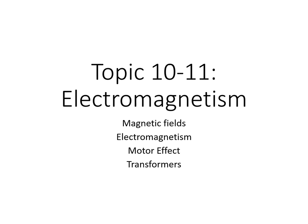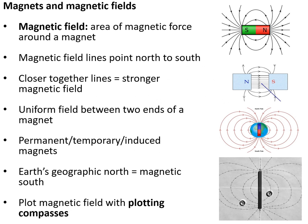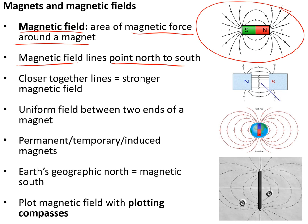Topics 10 and 11: electromagnetism, where we look at magnetic fields, electromagnetism, the motor effect and transformers. A magnetic field is the area of magnetic force around a magnet, described using field lines that point from north to south. The closer together those lines are, the stronger the field — so the field is stronger near the poles and weaker further away.